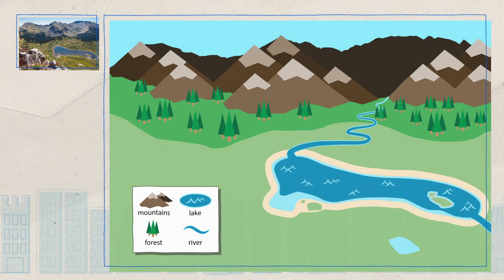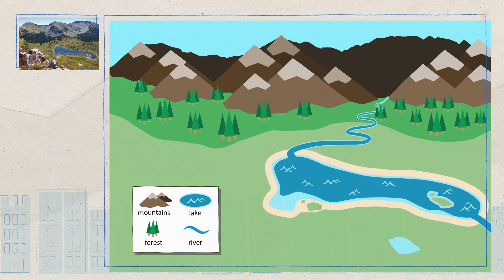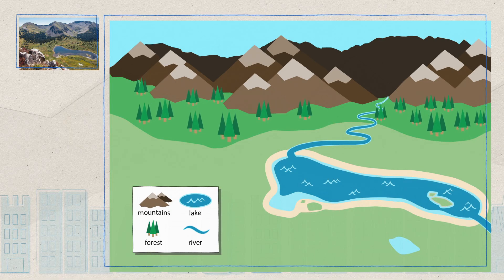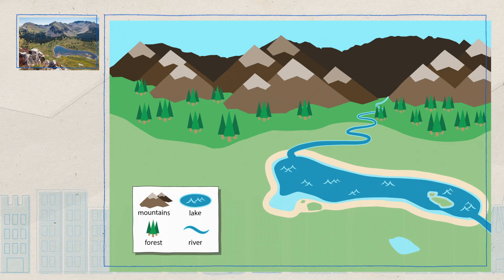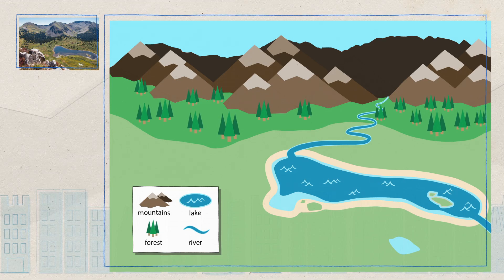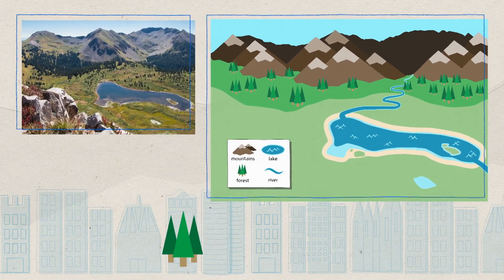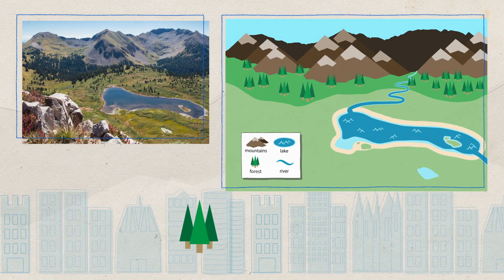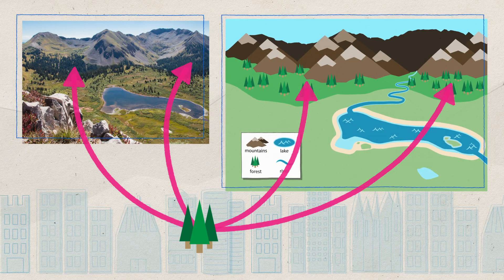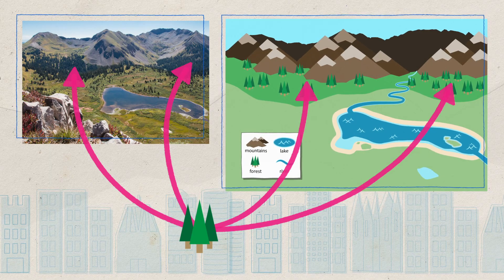What other features do you notice in the picture of the area? Do you see the trees? The map uses a green tree shape as the symbol for the forest. Notice that the forest symbol is in the same location as the trees in the real-life picture.